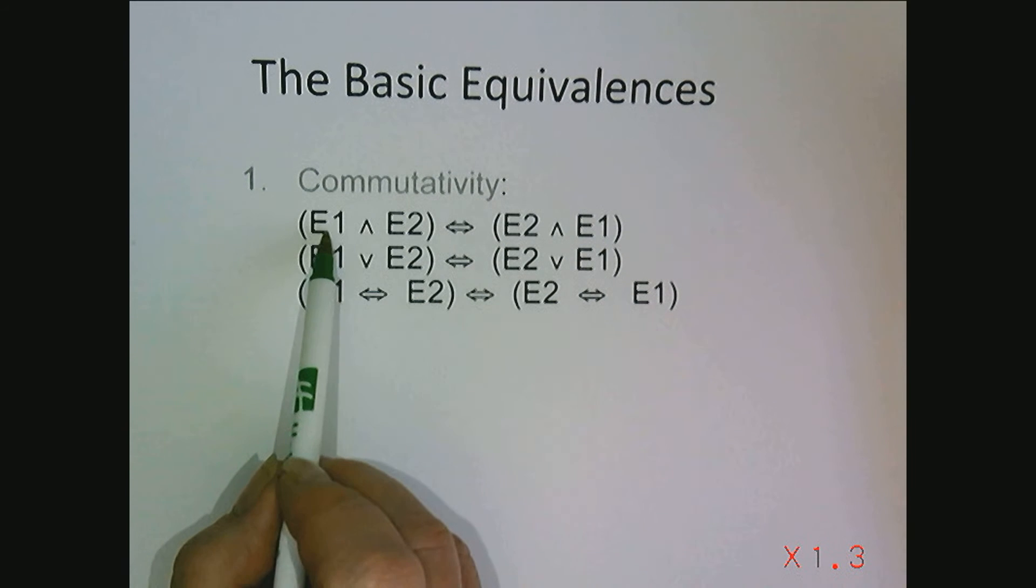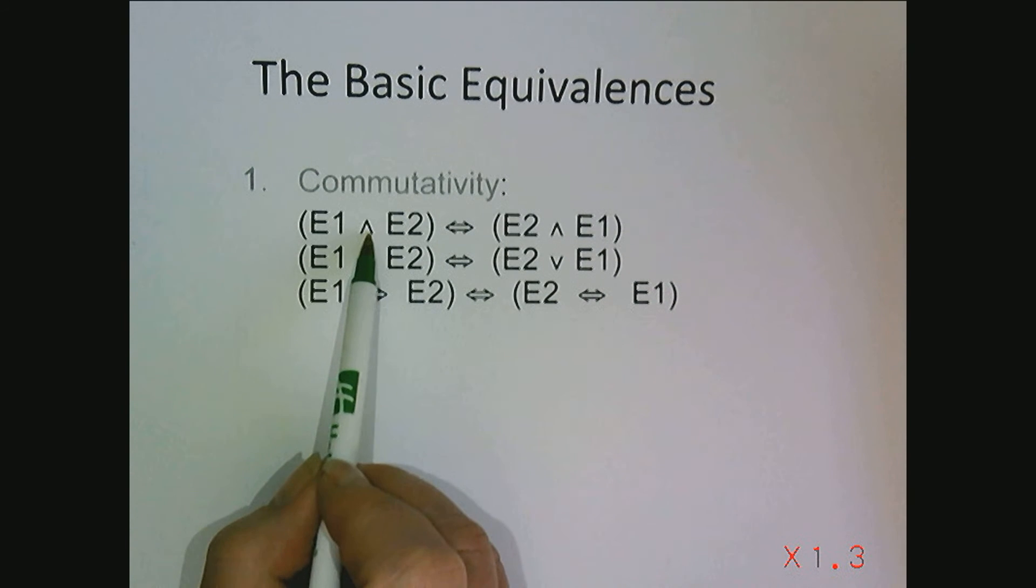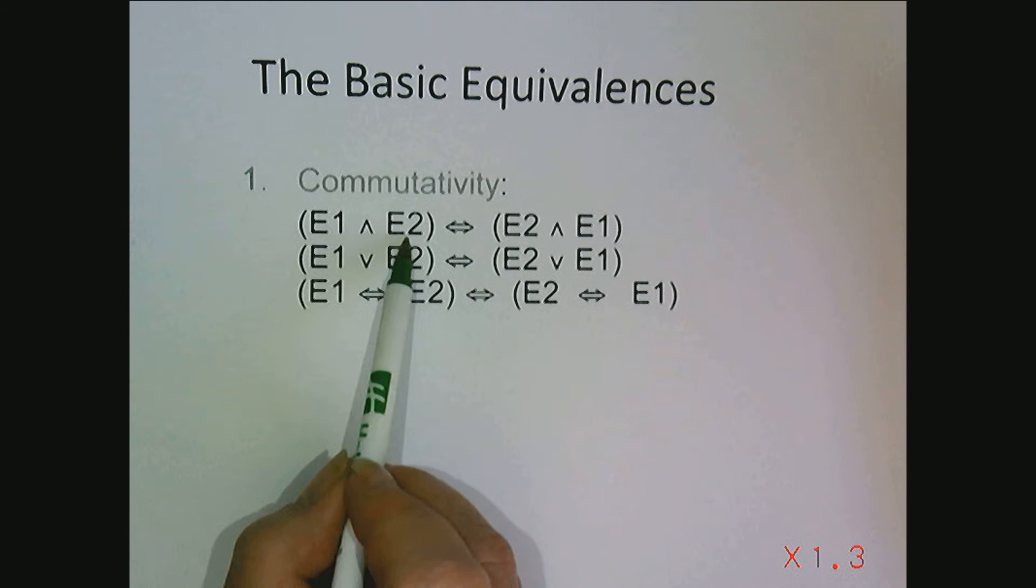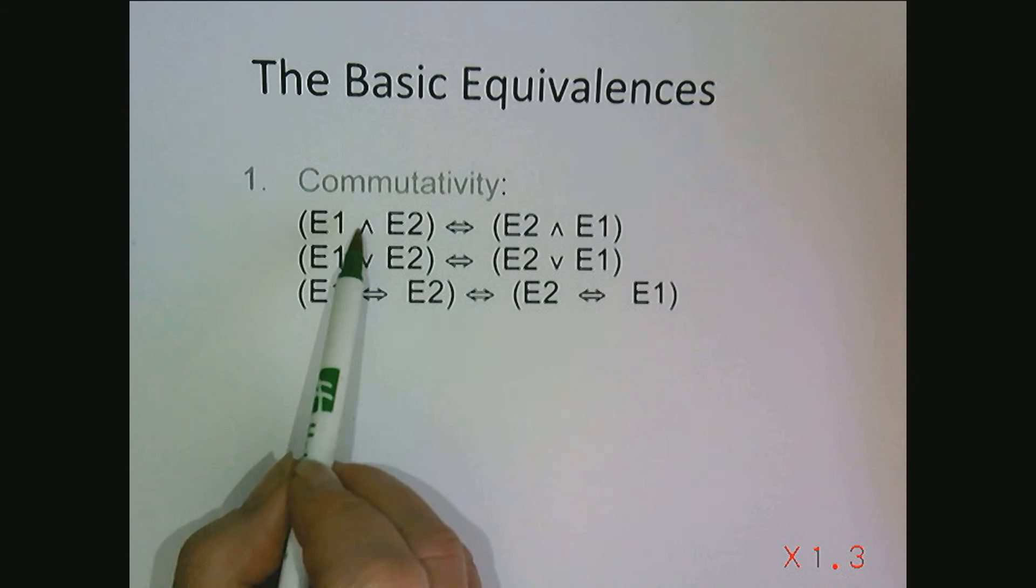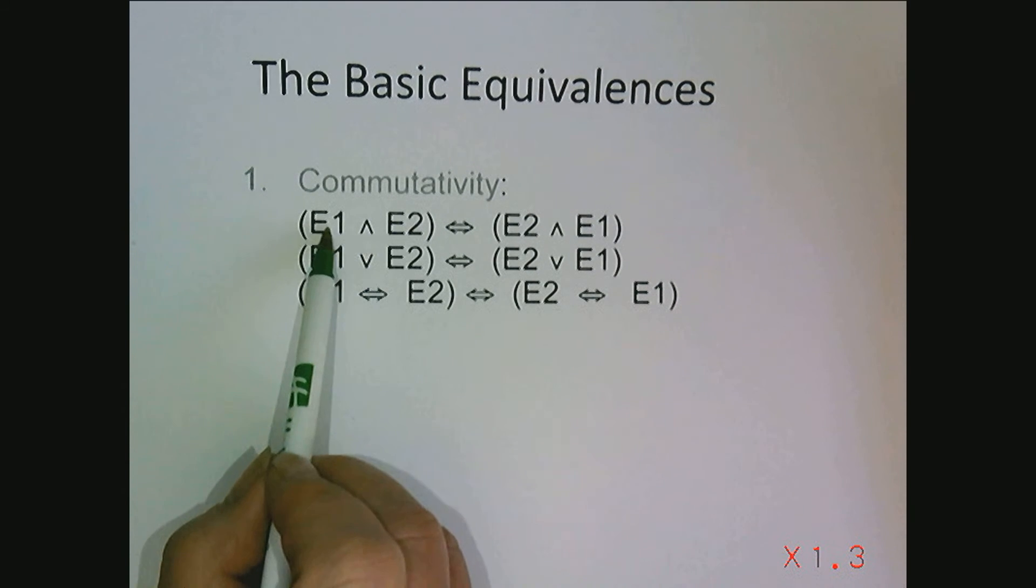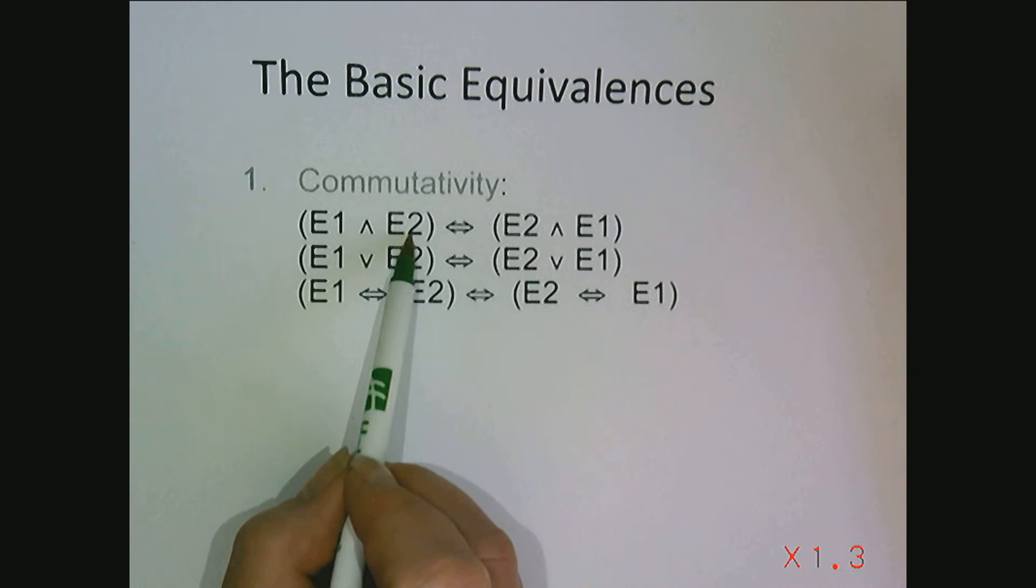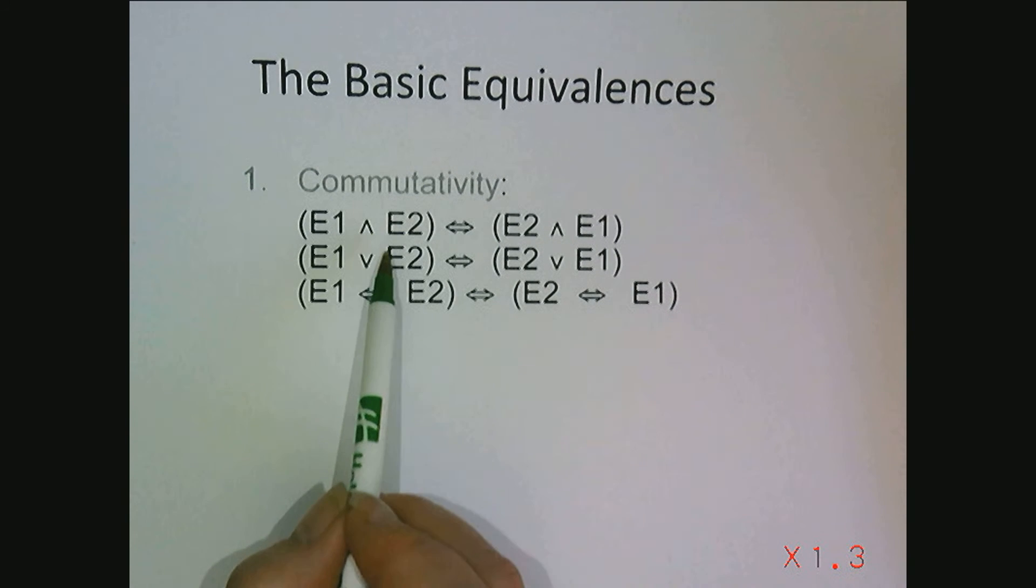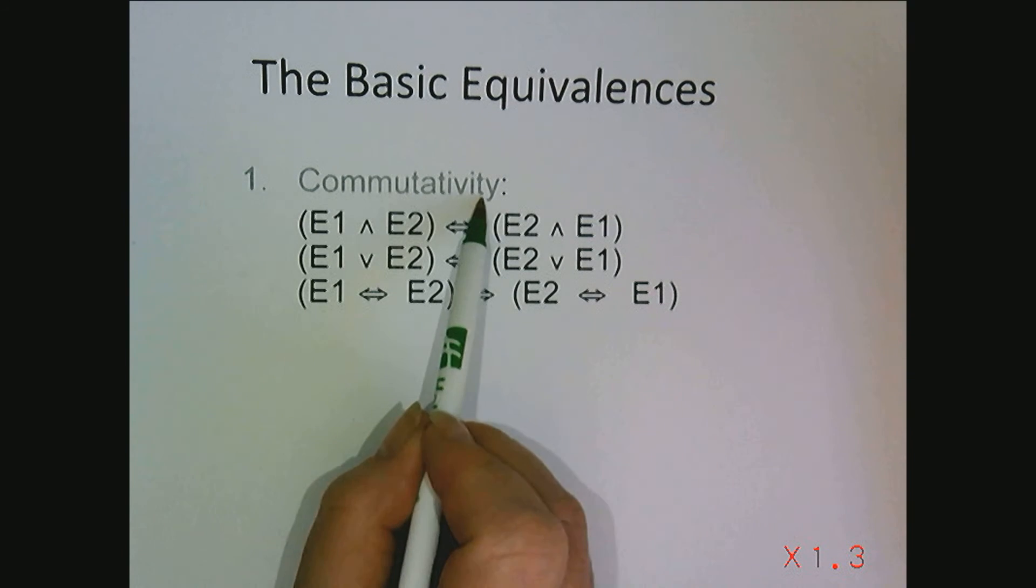We say conjunction is commutative. What in my mind that means is that the place for the expression isn't important. So E1 and E2 is the same as E2 and E1. Conjunction, disjunction, and equivalence are all commutative.